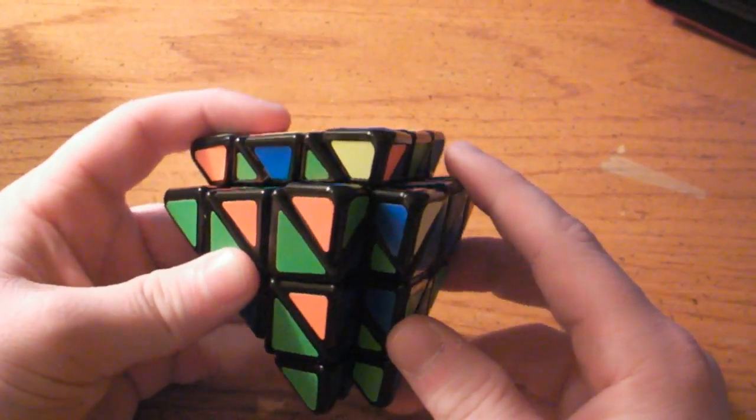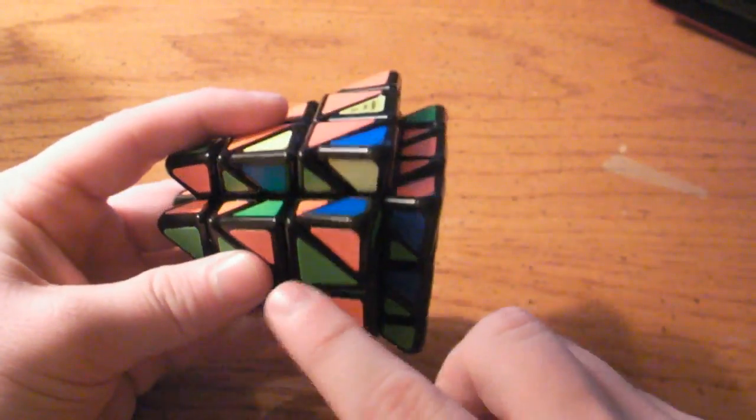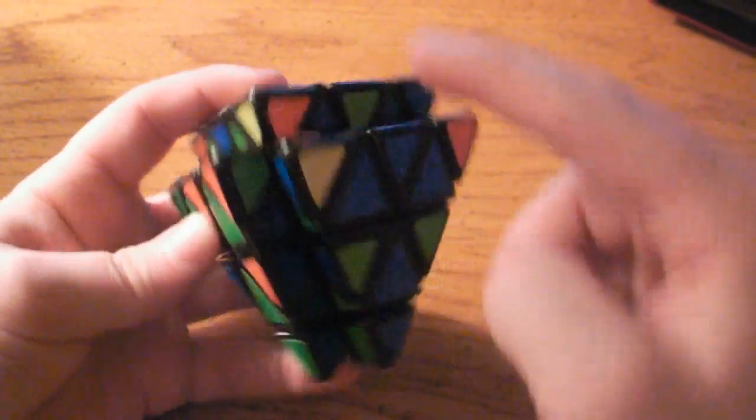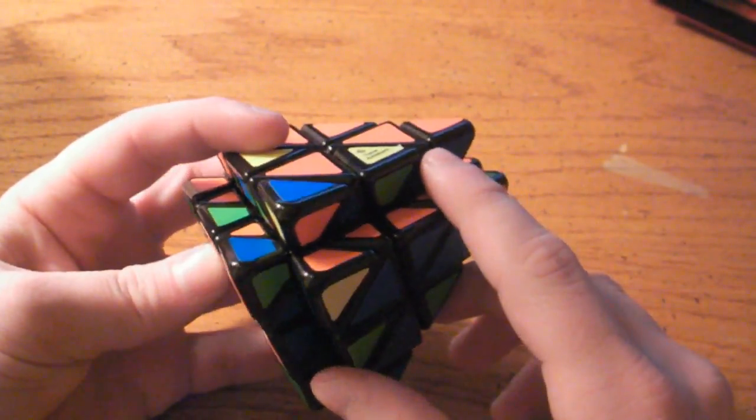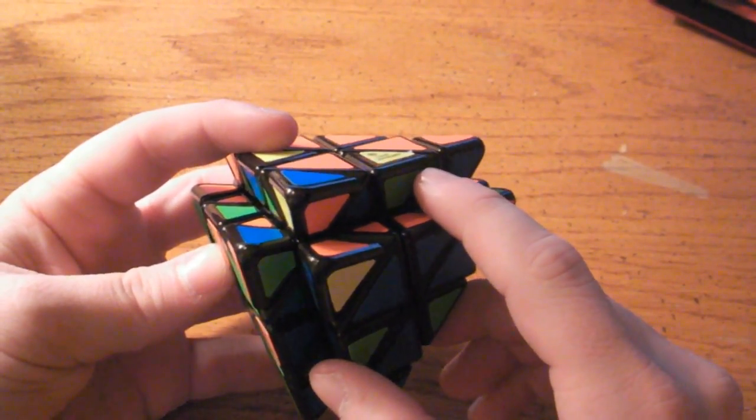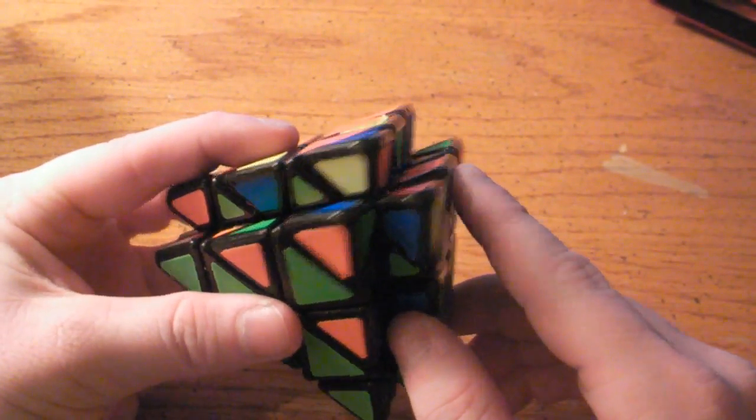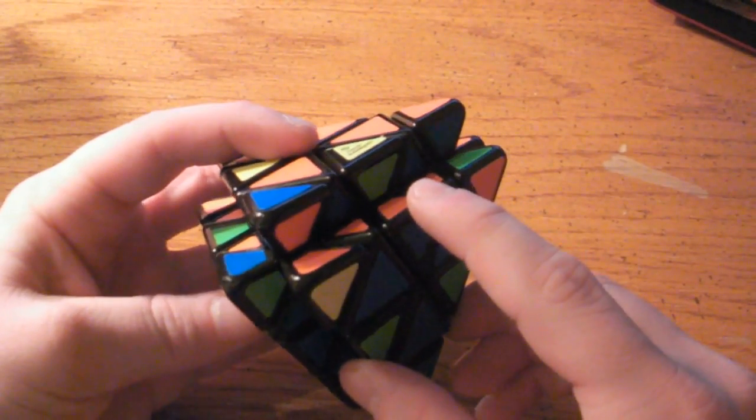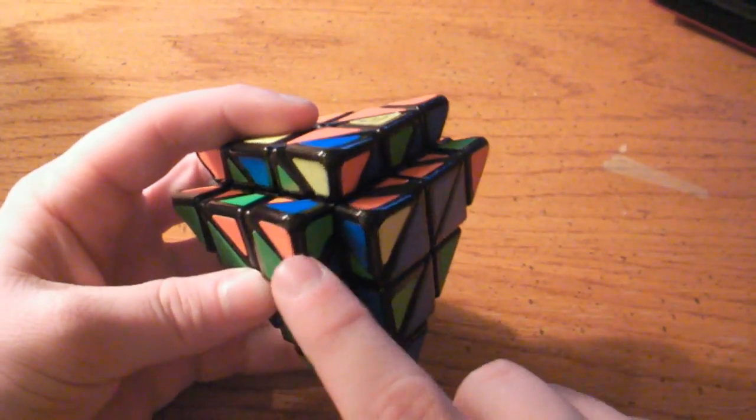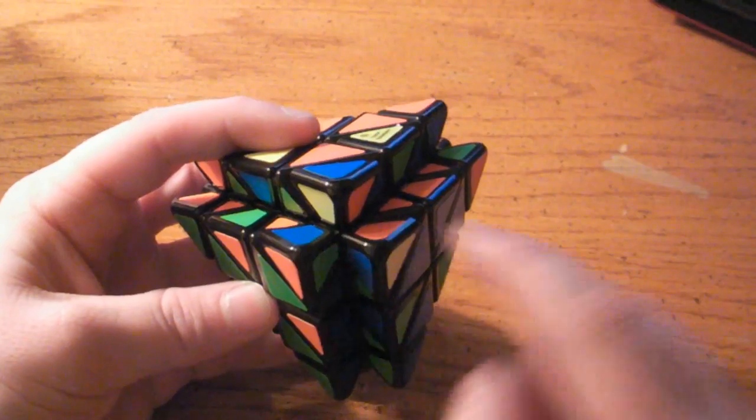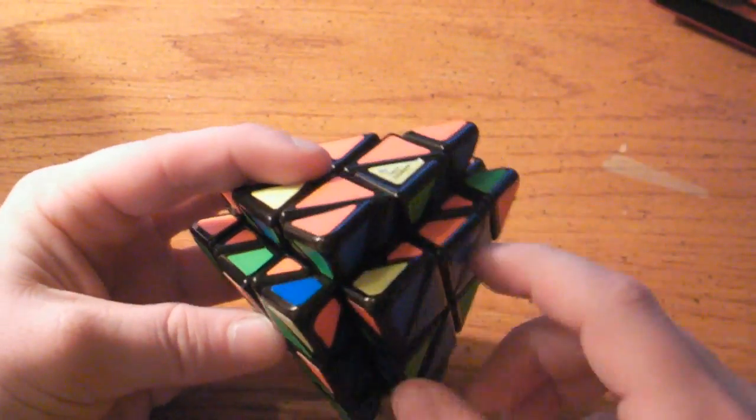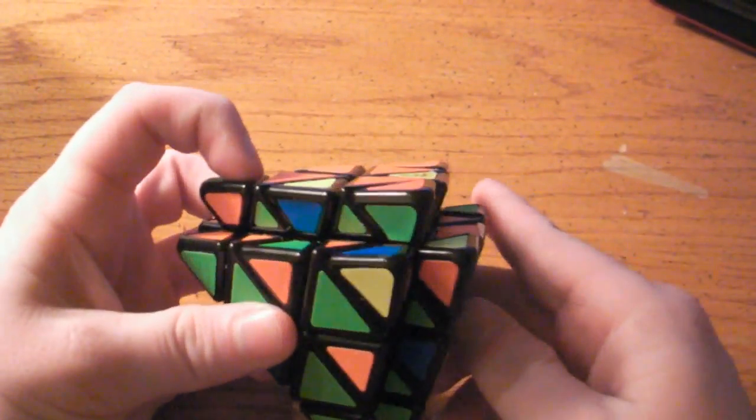So now the colors on this tip, very similar to the last one, are going to be green, orange, and blue. So now I need to look for all tips with green, orange, and blue. In this case, there are none on this side. That's actually a lie. There is one. There is a green, orange, blue piece right here. And if you turn it, that piece goes right there and matches up correctly.